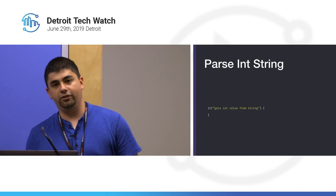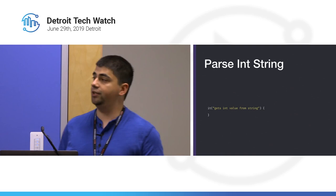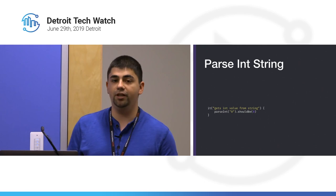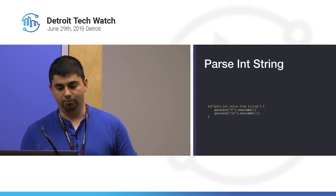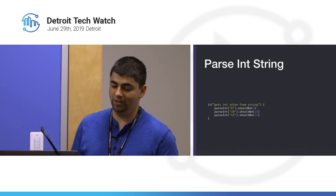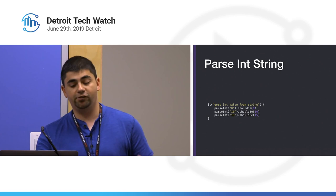Let's look at how we traditionally write tests. Say we want to parse an integer string into an integer value. We set up the test, pick a random example — let's say zero — put it in a string, run our parseInt function, and assert it should equal the integer zero. We also want to test a two-digit number, so let's say 10. We notice both end in zero, so let's switch to 15.